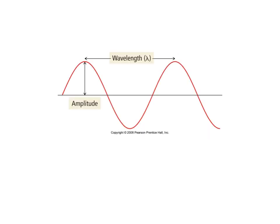We start by talking about a wave that is traveling through space. This would be a traveling wave, and it could be a light wave or a sound wave. We define the wavelength as the distance between the two maxima, and we can talk about the amplitude of the wave from this zero point right there.